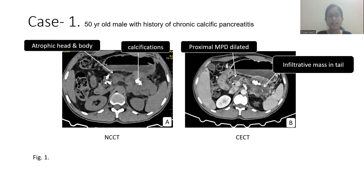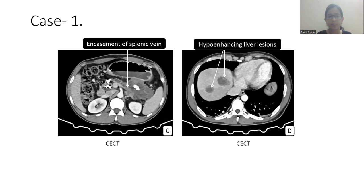Now we will start with the case series. Case 1: a 50-year-old male with a history of chronic calcific pancreatitis. Here we can see the atrophied head and body of the pancreas, an infiltrative mass in the tail region with calcification, and a dilated proximal pancreatic duct. Encasement of the splenic vein is also present.